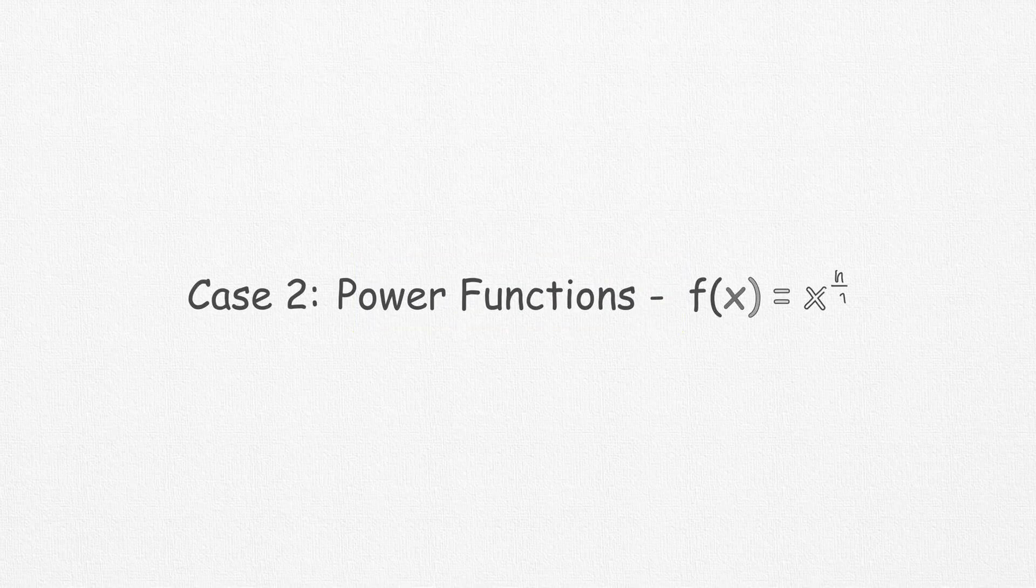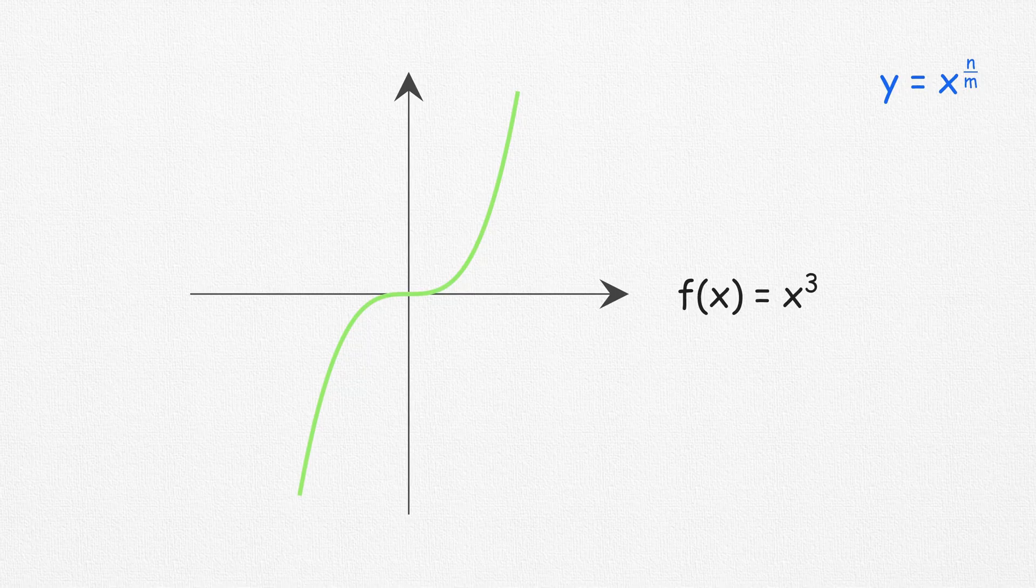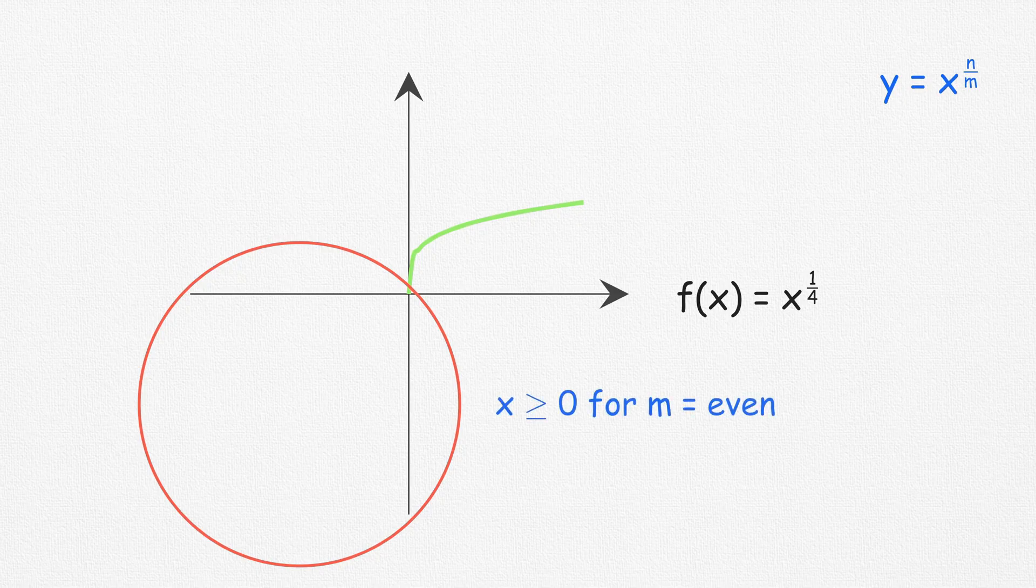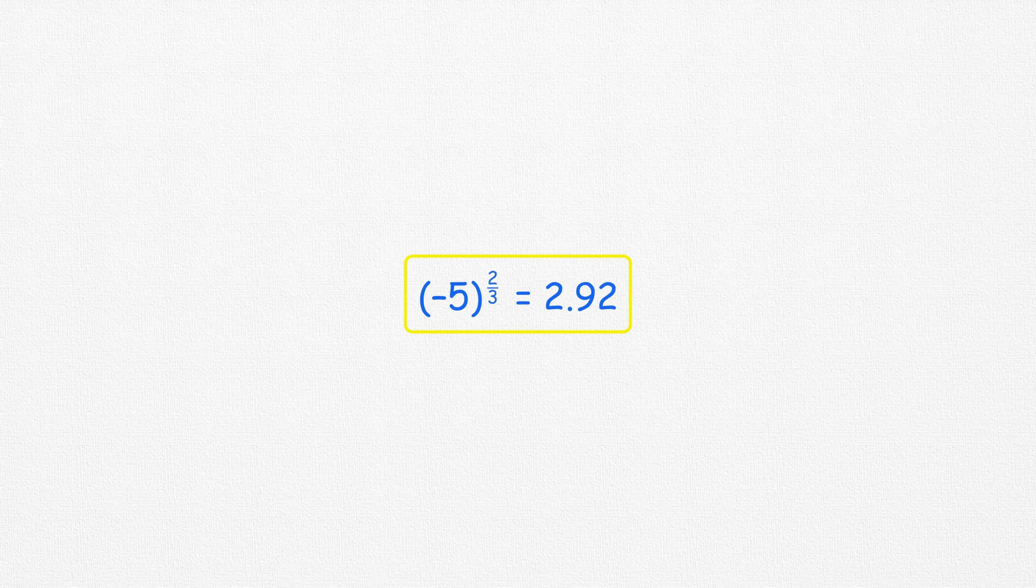The second case is x raised to some power. Here the base of the exponent varies keeping the power constant. x raised to the power any positive integer gives out a polynomial function, but the trickery happens when this power is a fraction. Notice for even denominators the function is undefined or there is no graph. Here minus 5 to the power 2 by 3 gives out 2.92.